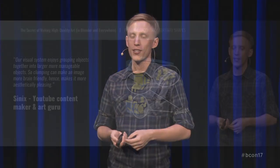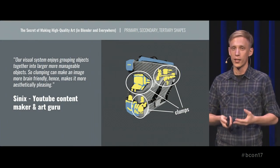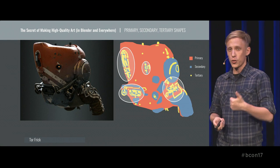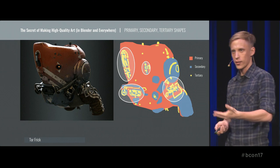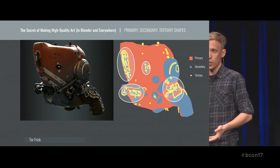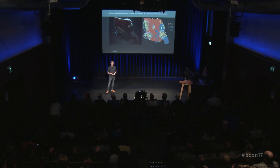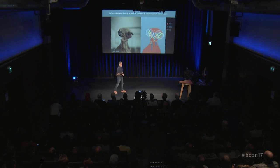As Cynix, the YouTube design genius, points out: our visual system enjoys grouping objects together into larger, more manageable objects. So clumping can make an image more brain-friendly, hence more aesthetically pleasing. Needless to say, if you now take a look at all these editor's picks, you will see these clumps or groups of shapes everywhere. And I can go through this endlessly — just check it out, guys.